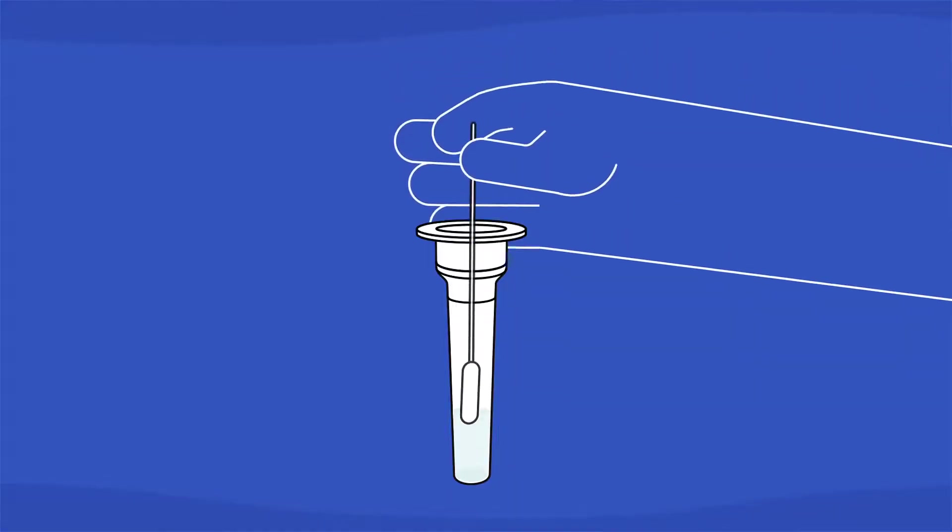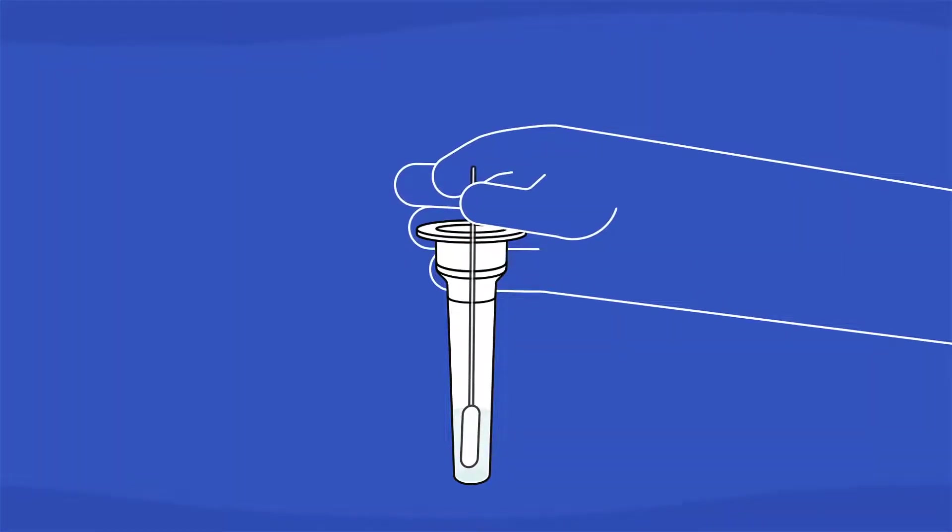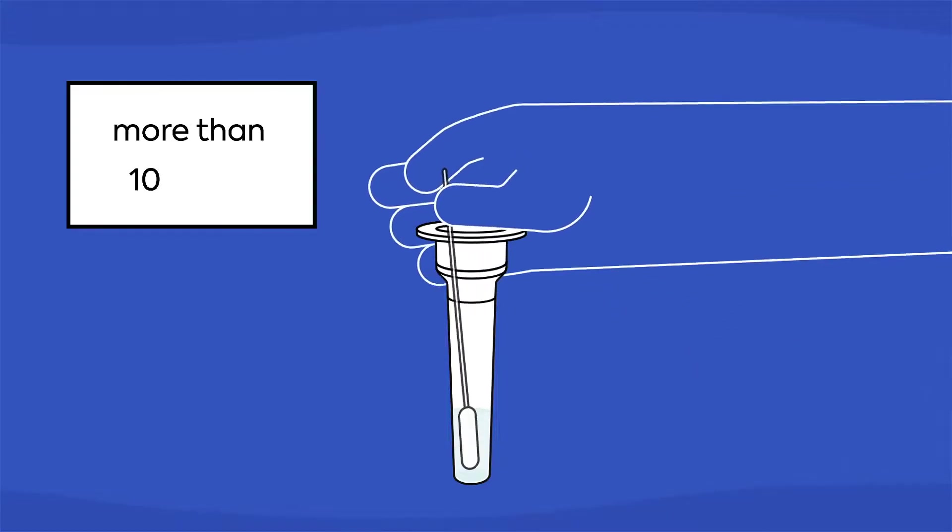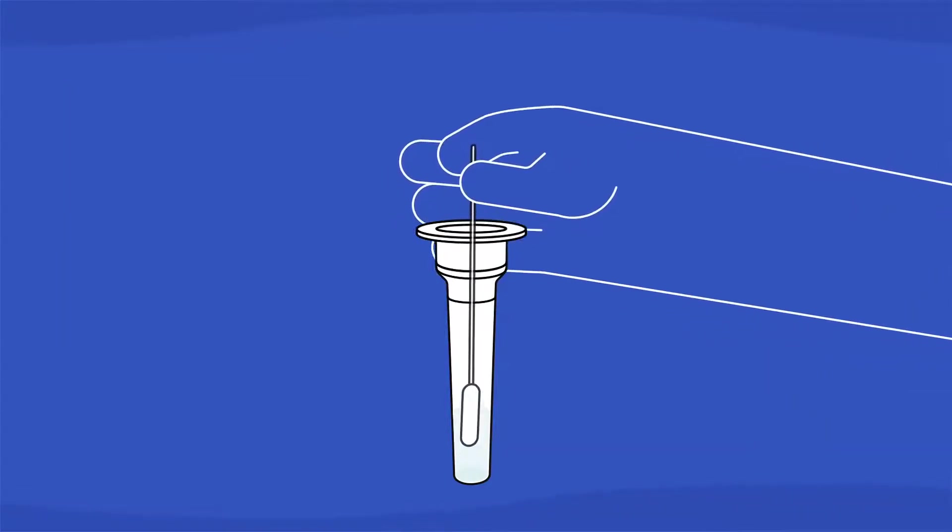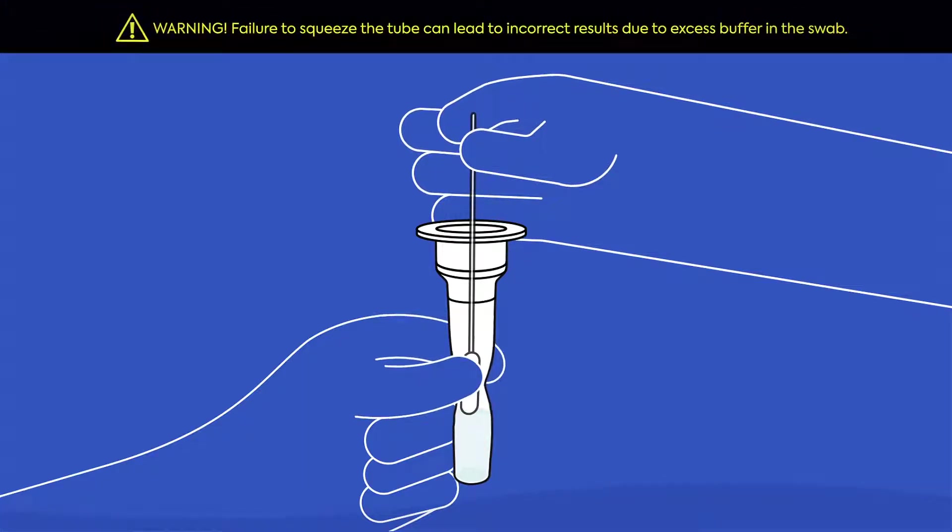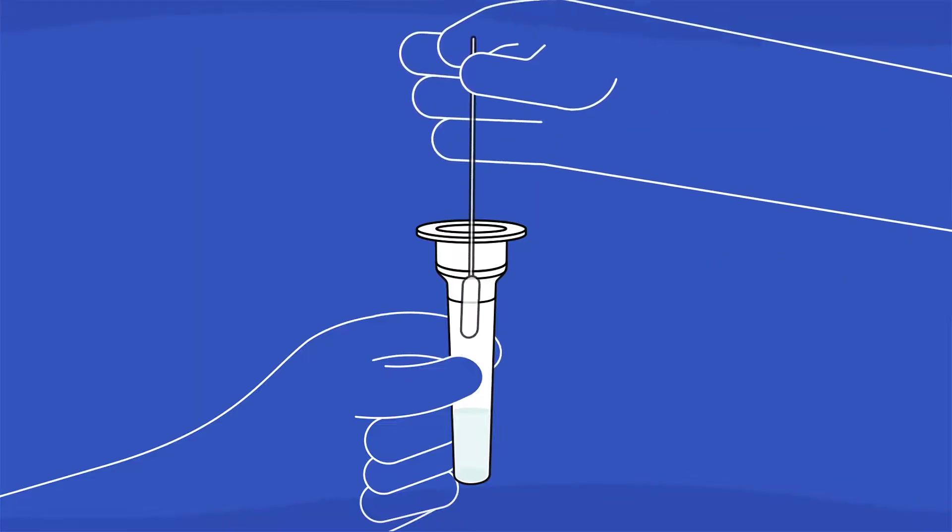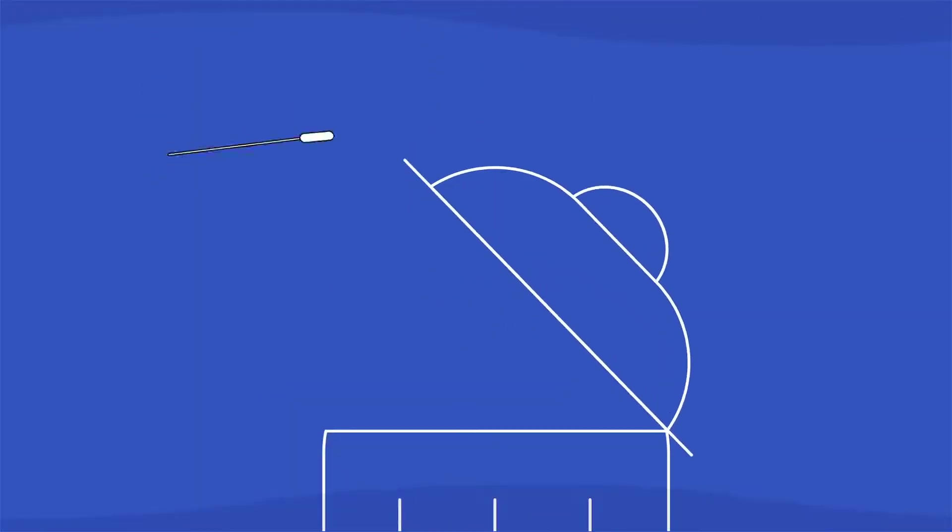Now directly insert the swab into the extraction buffer tube. Stir the swab vigorously more than 10 times. Shake it like you mean it. Take out the swab from the tube by squeezing and applying pressure on both sides of the tube. Make sure you get all the liquid out of the swab tip. Go ahead and dispose the swab into a trash can.